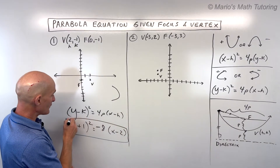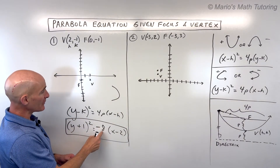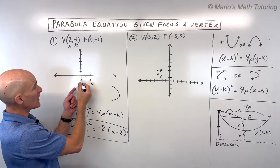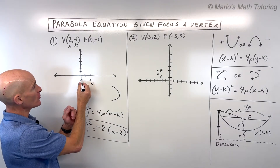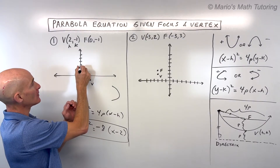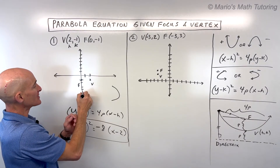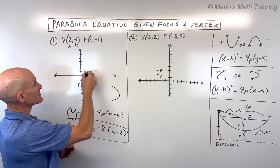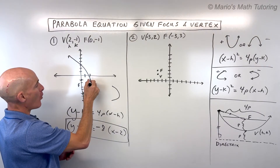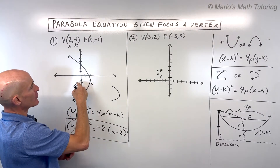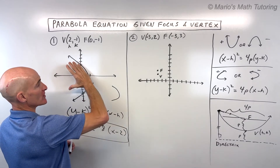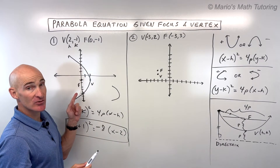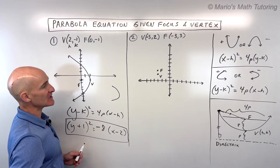As far as the graph is concerned, at the level of the focus it's going to be 4p wide, which is 8 wide. From the focus, I can go up 4 and down 4, cutting that in half gives a width of 8. This gives us an idea about how wide this parabola is at the level of the focus. This is called a focal chord — it's the latus rectum — and that gives you an idea of the width.